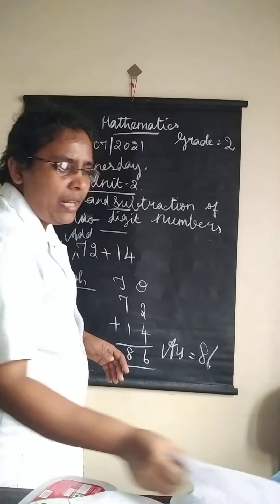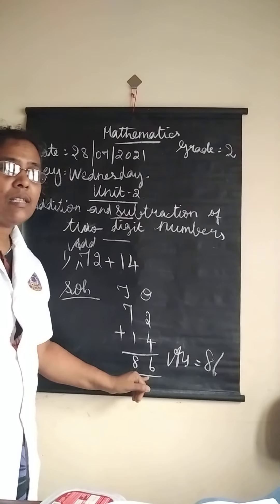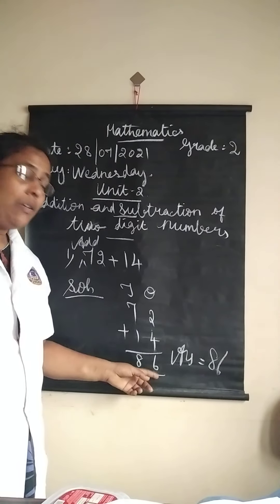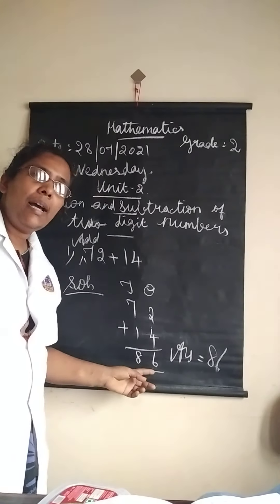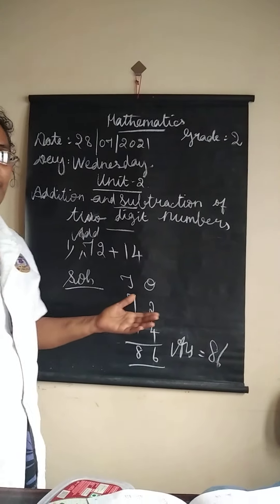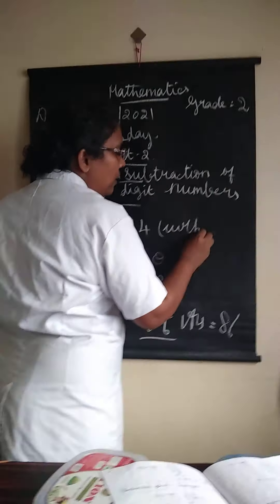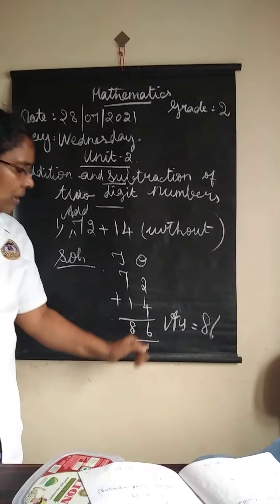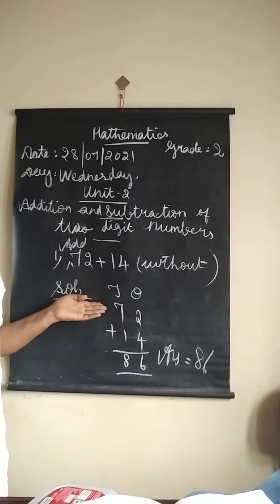Do you understand this question? Here, when we are adding the number in the ones place, we didn't get a balance number. Whether we have balance? No balance. So this is called without regrouping. Because here we don't have balance, we say that is without regrouping.